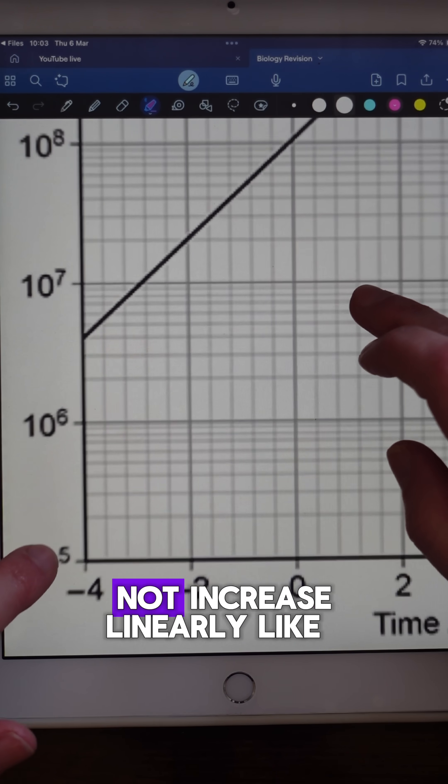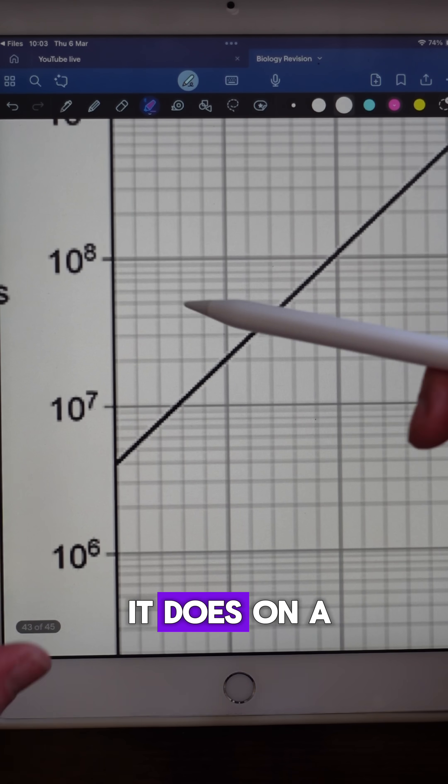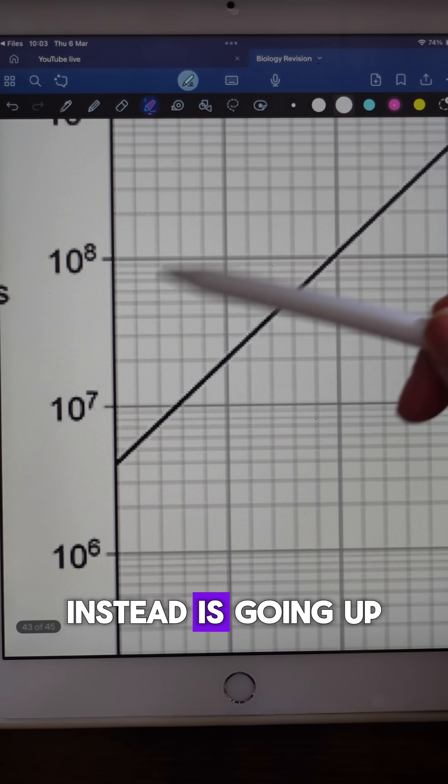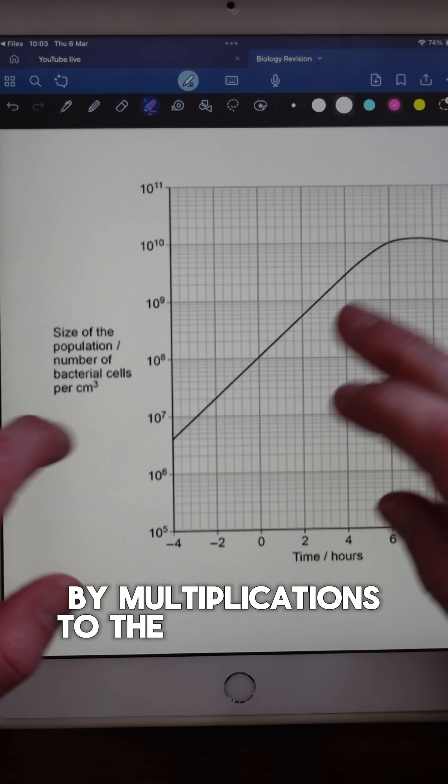In a log graph the y-axis does not increase linearly like it does on a typical graph. Instead it's going up by multiplications to the power of 10.